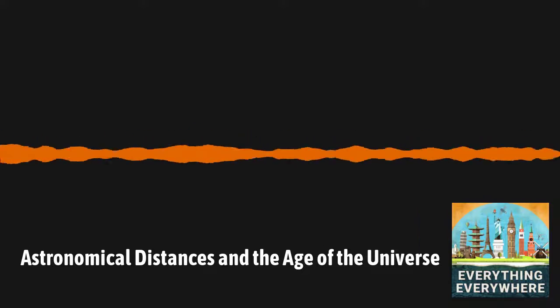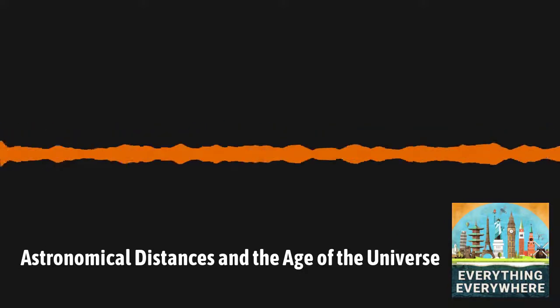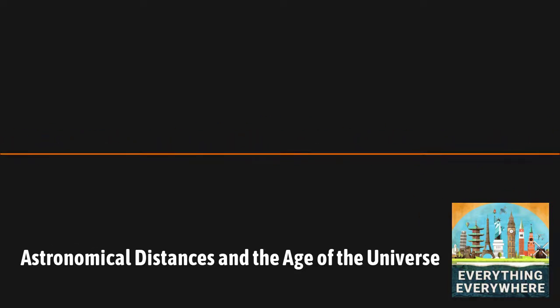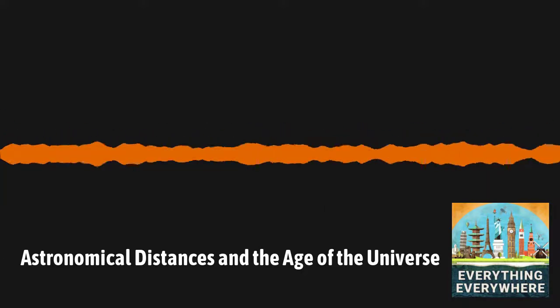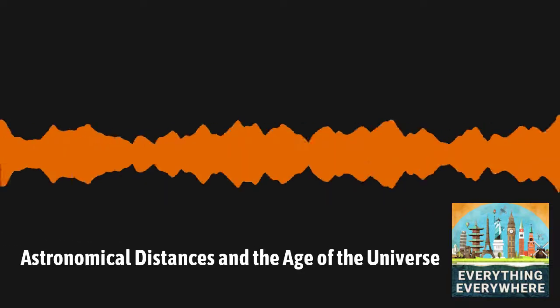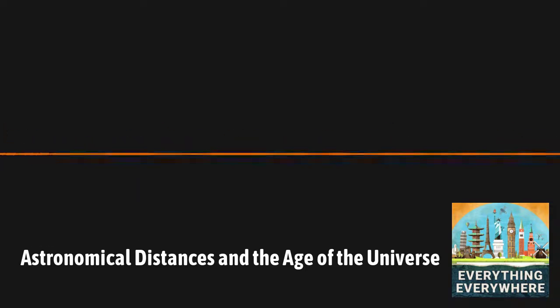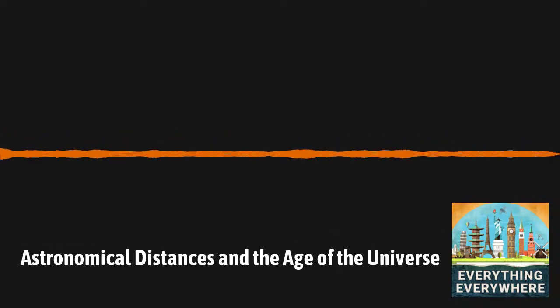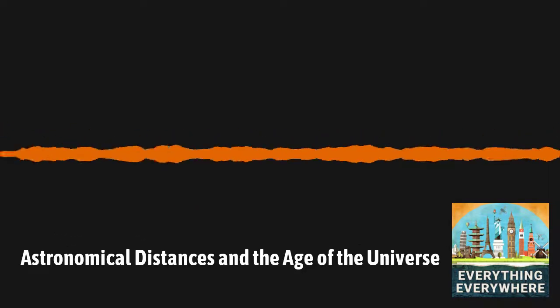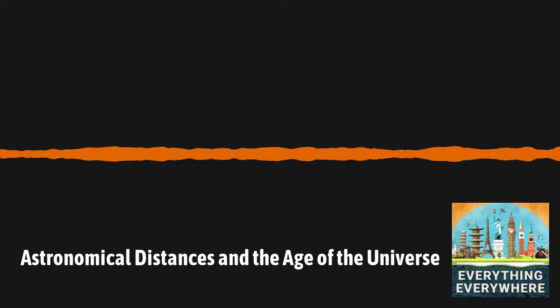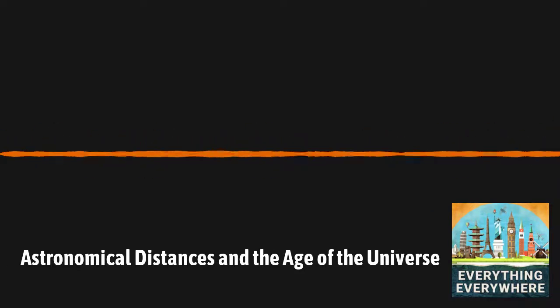But what about the images which are taken by the Webb and Hubble telescopes, which claim to show objects from the edge of the observable universe? How can we measure those distances? For that, we need something known as Hubble's Law. Hubble's Law is named after the early 20th century astronomer Edwin Hubble, who discovered one of the most important fundamental facts in astrophysics. Galaxies move away from Earth at speeds proportional to their distance. In other words, the farther away a galaxy is, the faster it's moving away from us.